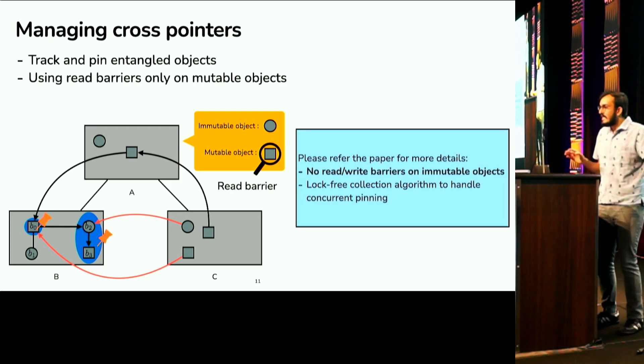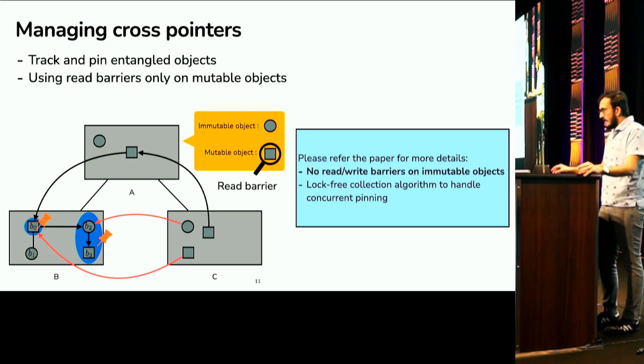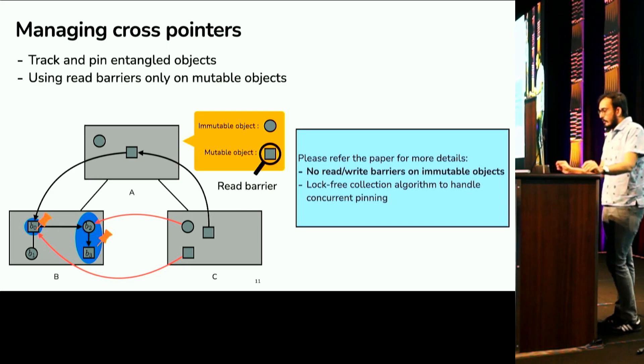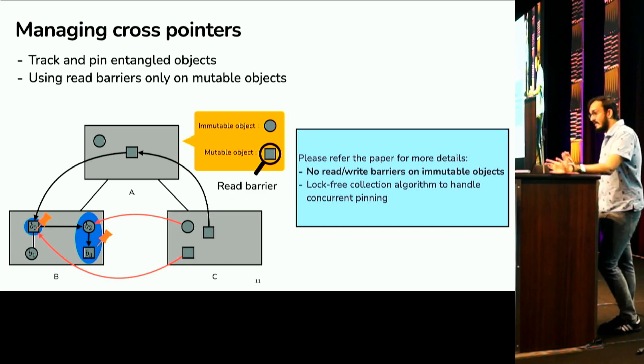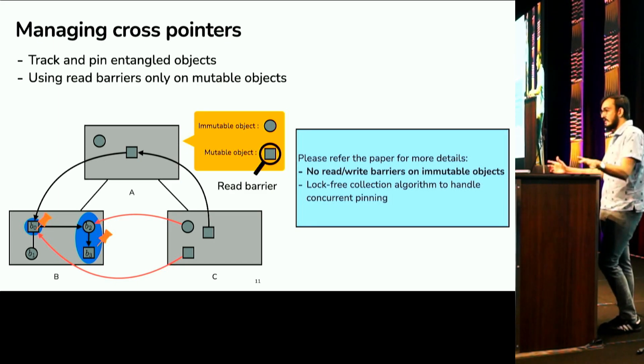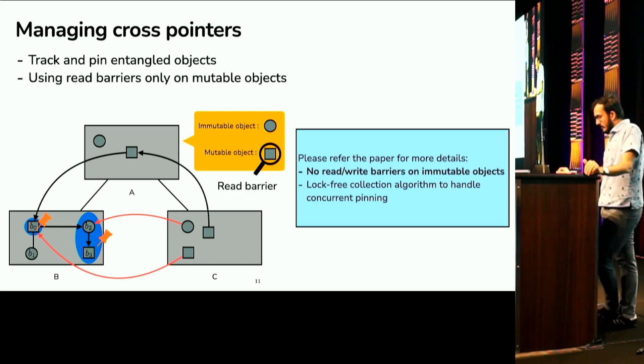So basically, there are no read barriers on immutable objects, which is very important for efficiency because most of the reads of a parallel function language runtime are on immutable objects. Now, there are more details on how we skip read barriers on immutable objects in the paper, and I don't think I'll have time to go into them. But when a thread now wants to garbage collect, we also implemented a lock-free collection algorithm to account for concurrent pinning. So, what might happen is as you garbage collect, you know a set of pinned objects at the start of collection, but some other threads might come in and pin new objects. So, we want to have to deal with that concurrency. And these details I'll defer to the paper. Please read it.